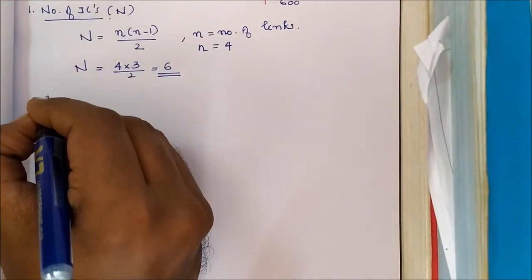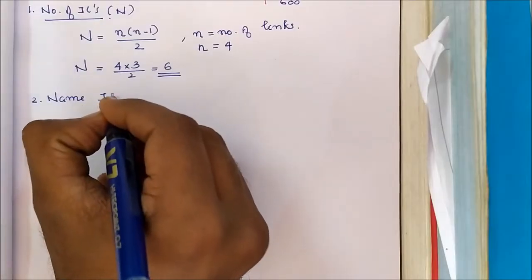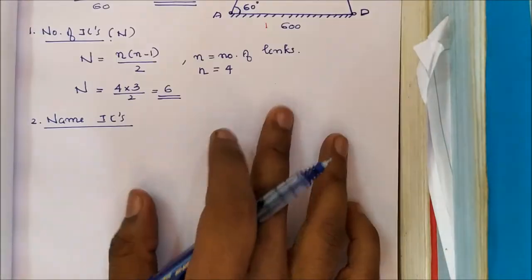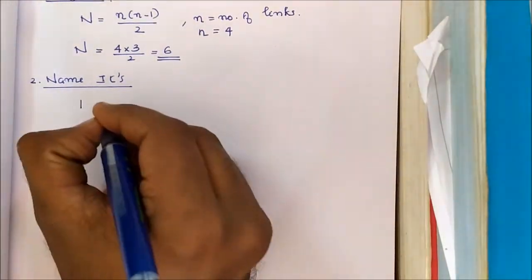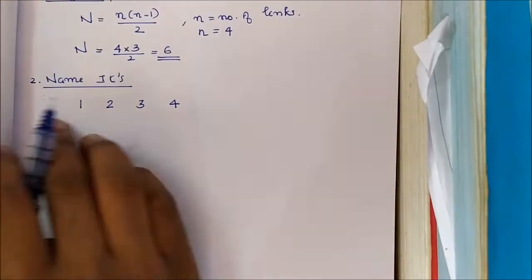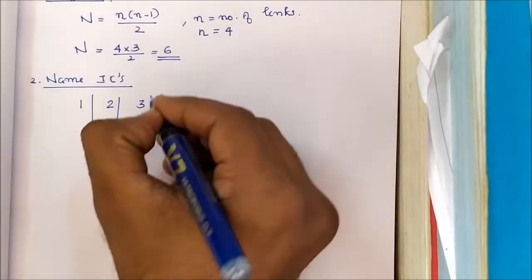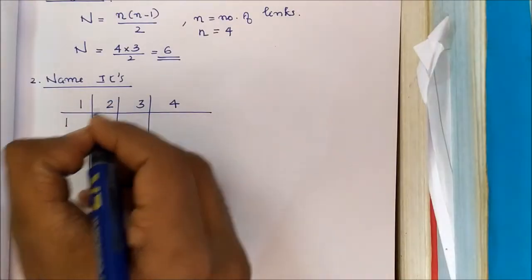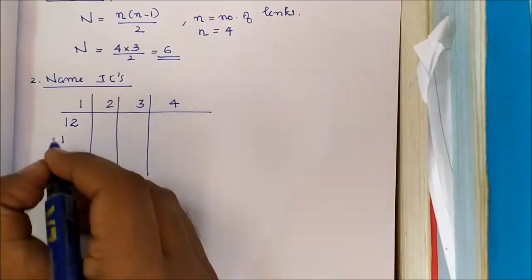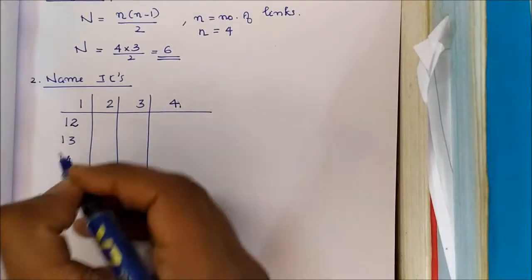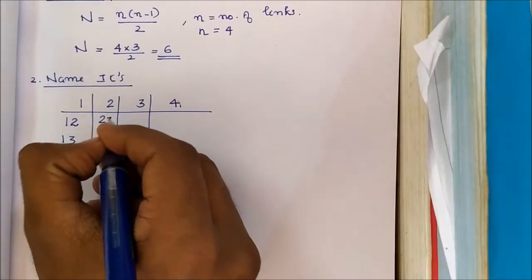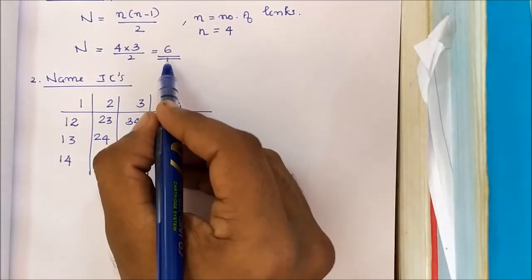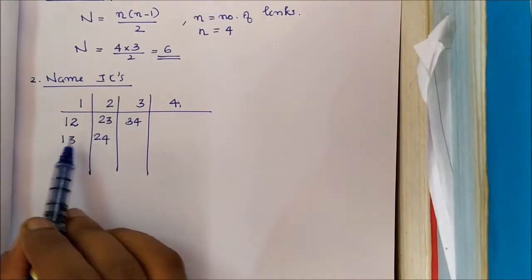The second step is to name the instantaneous centers. We have 4 links: 1, 2, 3, and 4. The 6 instantaneous centers are: i12, i23, i34, i14, i13, and i24. We confirm there are 6 instantaneous centers in total.